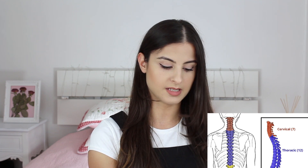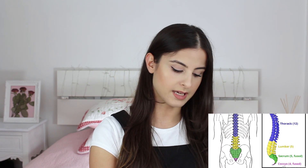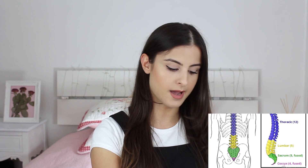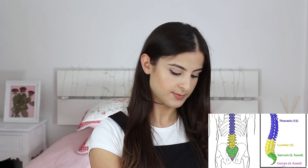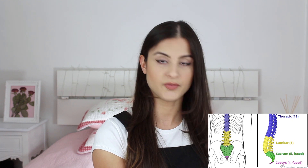There are 12 bones in the thoracic section — the majority of the bones in your spine. Moving down to the lower back is the lumbar part, and there are five bones there. Under that is the sacrum, which is five fused bones, and then you have your coccyx, which is four fused bones.